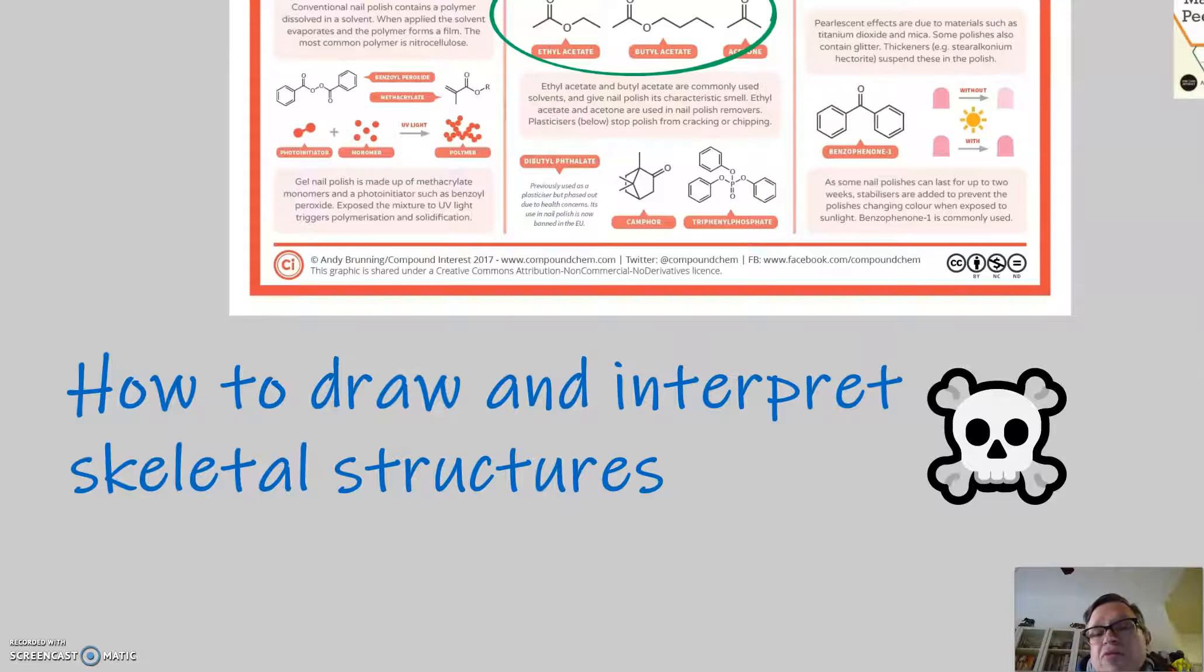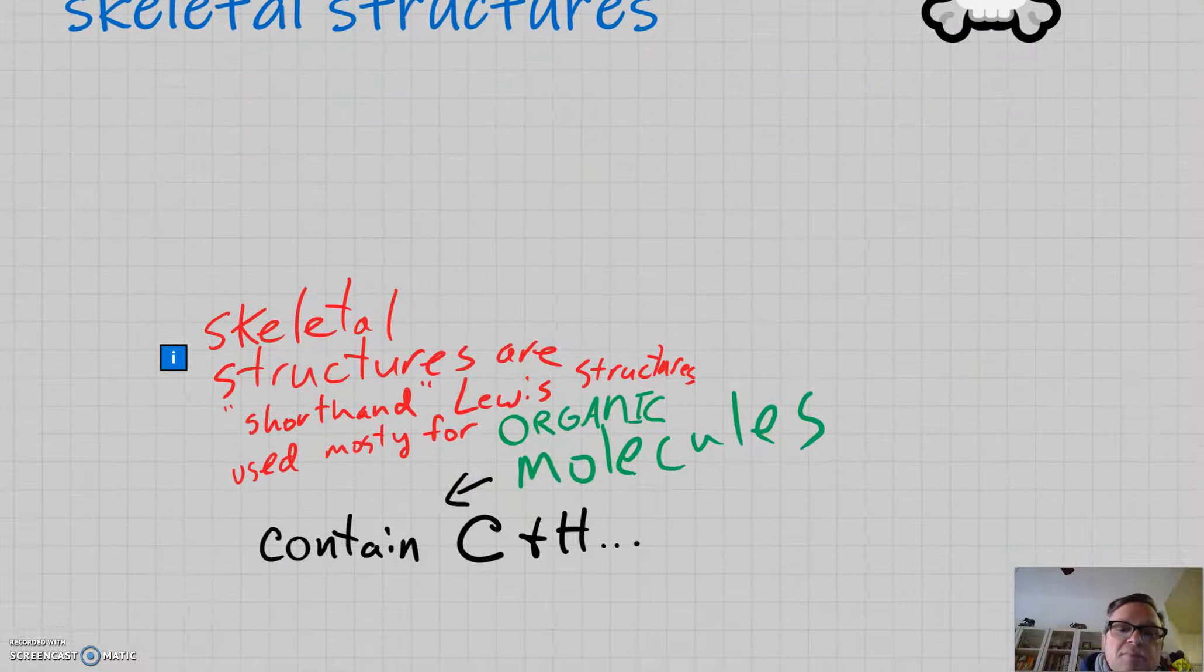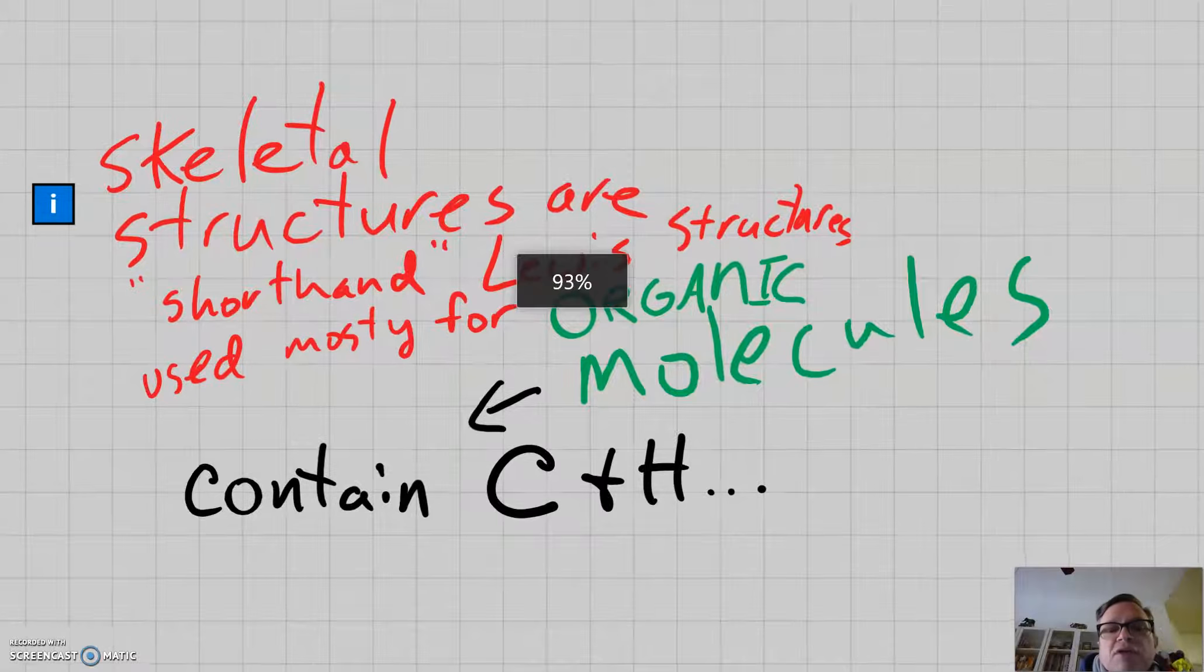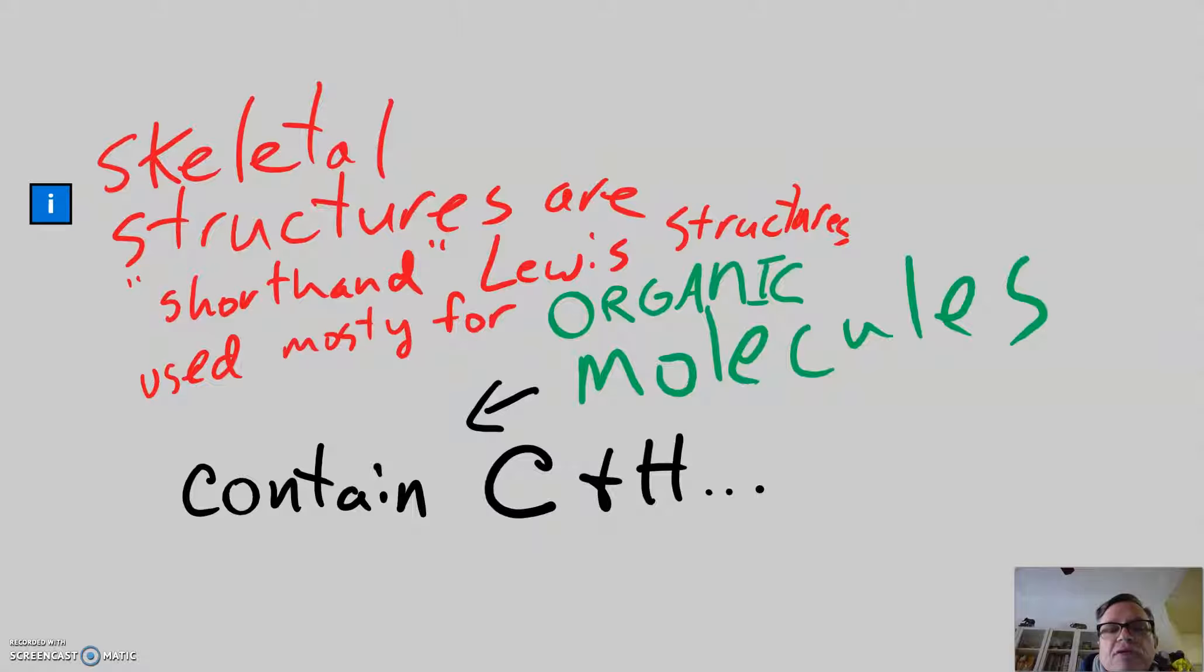We're going to learn about how to draw and interpret skeletal structures, which is what those drawings are called. Skeletal structures are shorthand Lewis structures that are used mostly for drawing organic molecules. And remember that organic means chemicals that contain carbon and hydrogen.